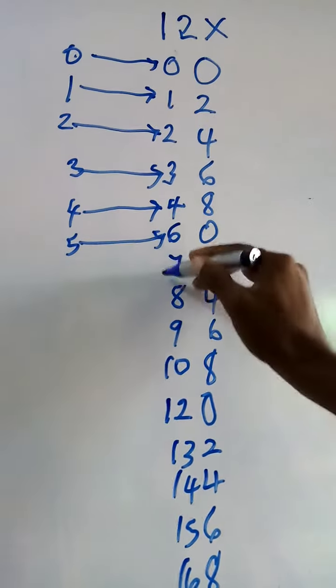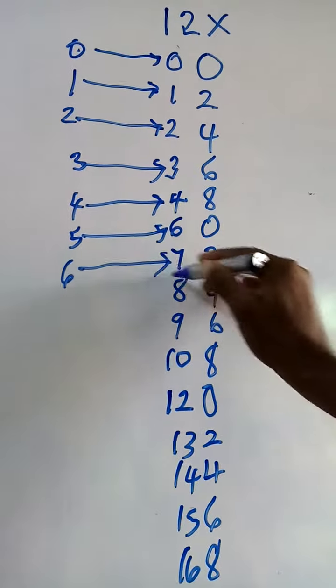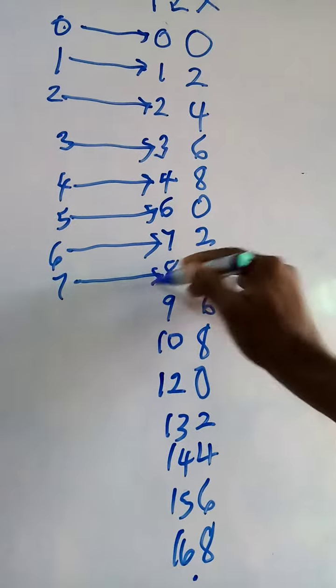Twelve times five, sixty. Twelve times six, seventy-two. Twelve times seven, eighty-four.